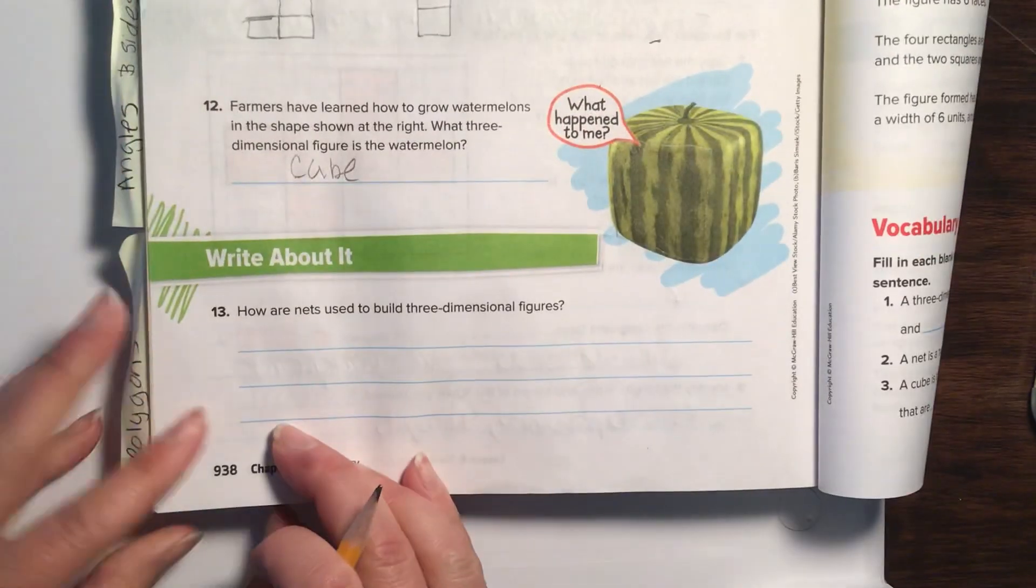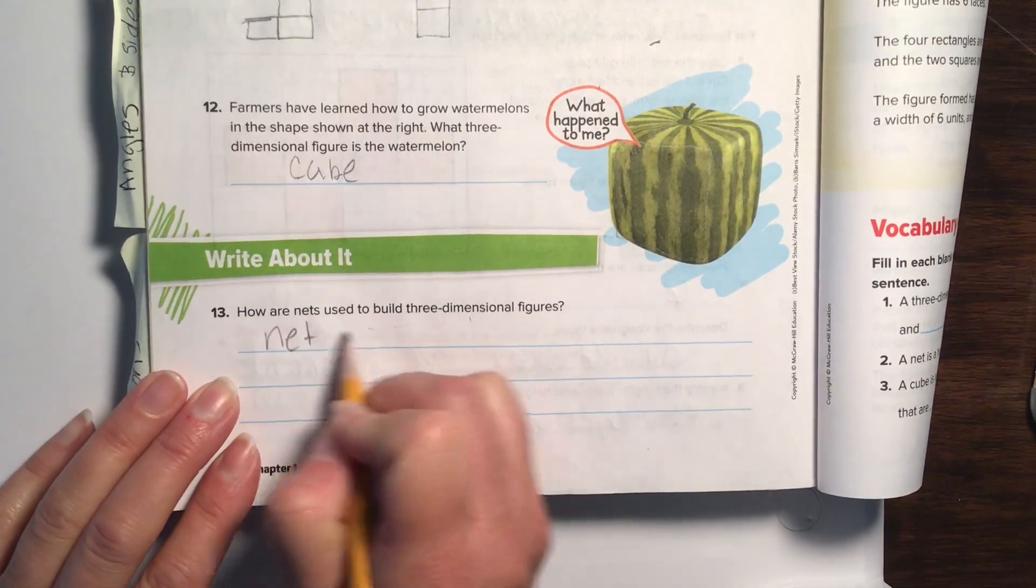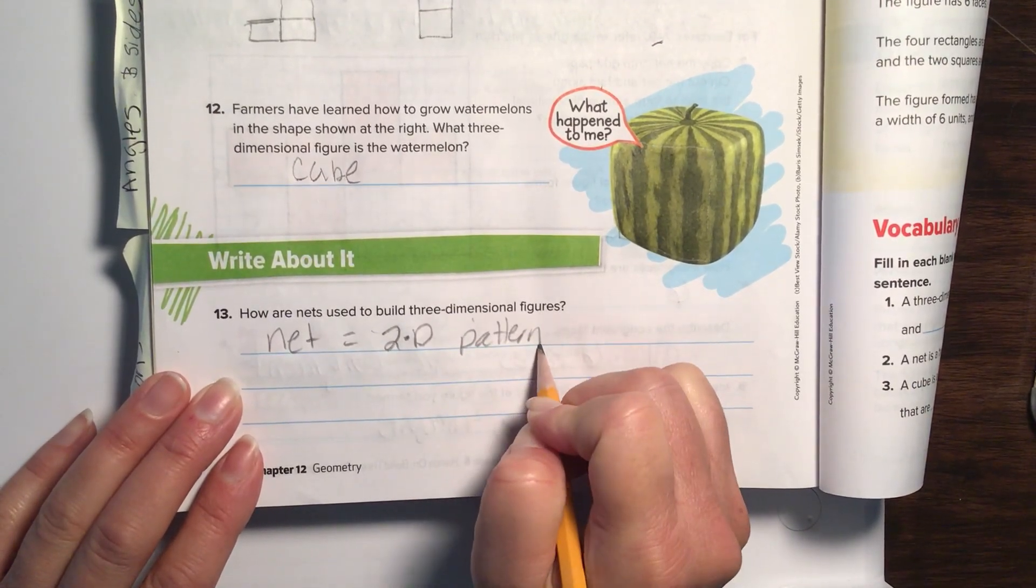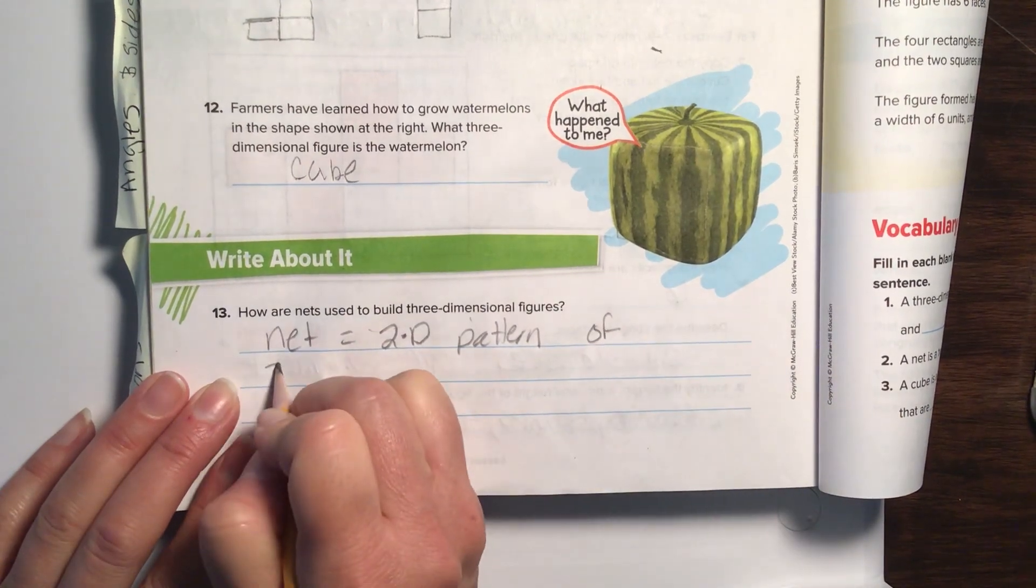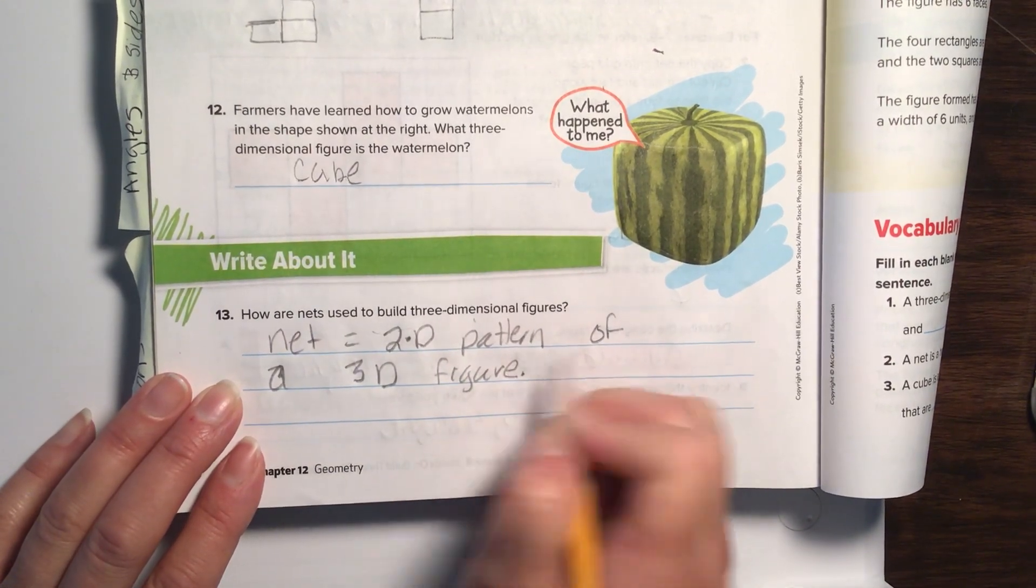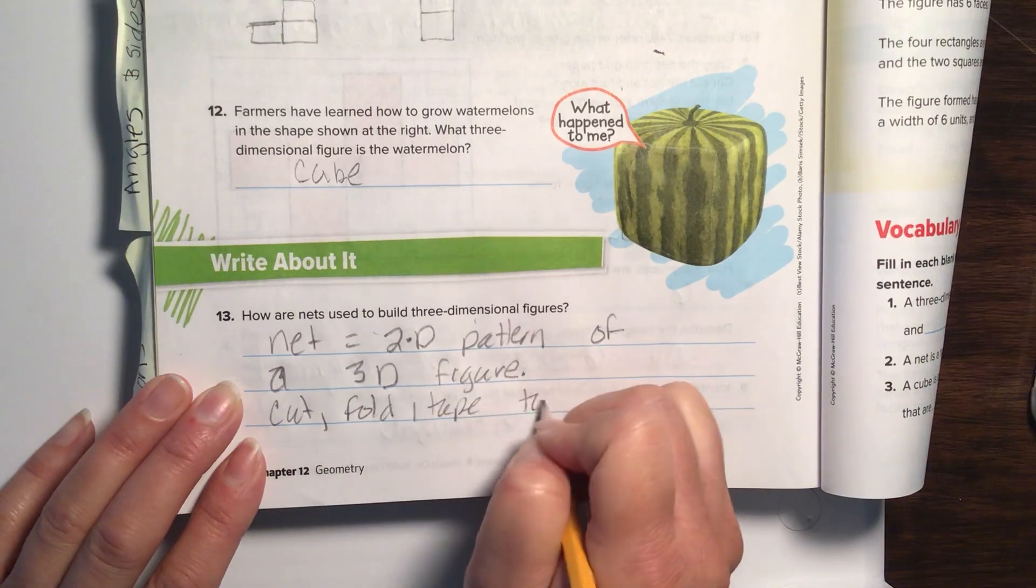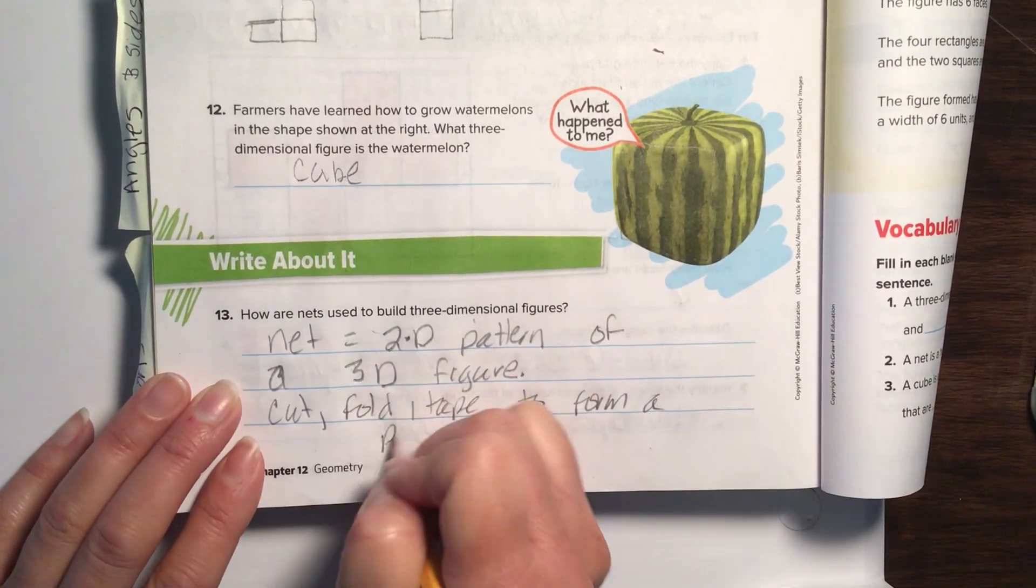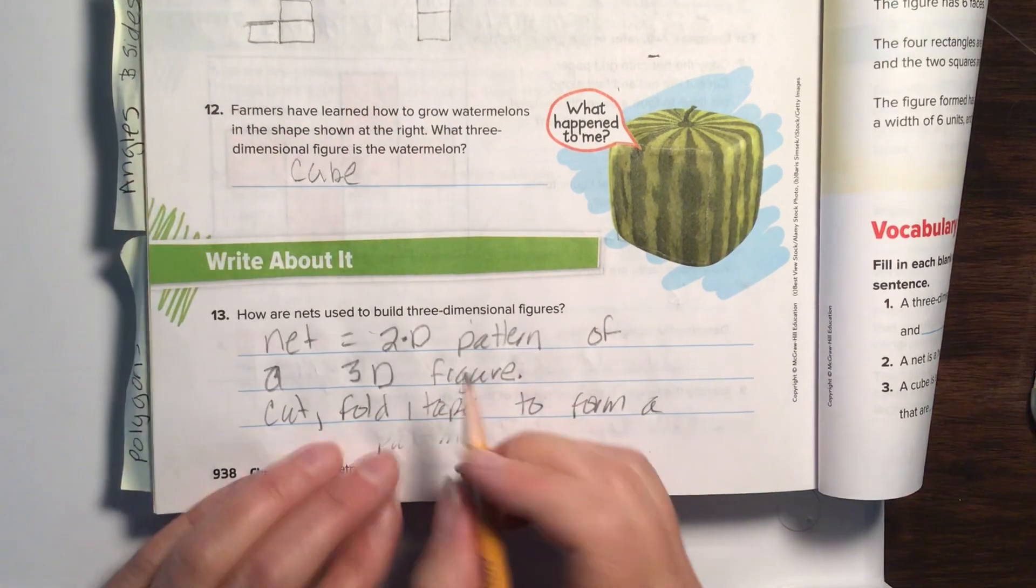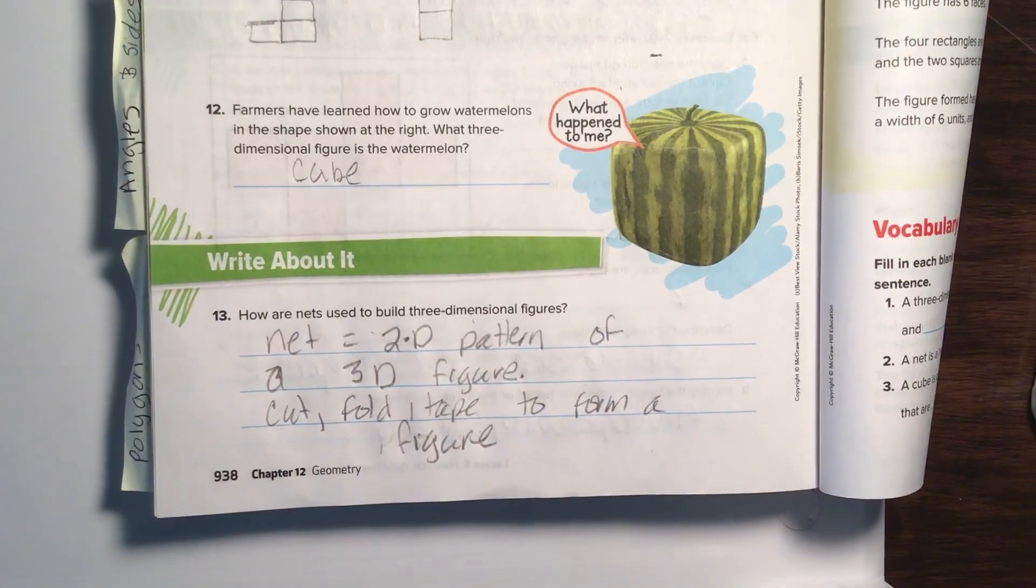All right, number 13. And then we are done with this guided practice. How are nets used to build three-dimensional figures? Well, a net is a two-dimensional pattern. It's a 2D pattern of a 3D figure. You can cut, fold, and tape to form a figure. All right. There you go, friends.